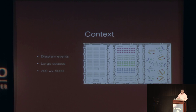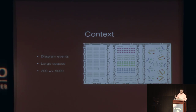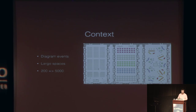I work for a company called Social Tables. It's an events and hospitality company, and one of our main products is diagramming software. This is a screenshot of our application — basically it allows venues and event planners to collaborate and define an event space before the actual event takes place. People use this for anything from a really boring theater layout, like what you're in today, to a really crazy party that looks like confetti when you're looking at it from above.